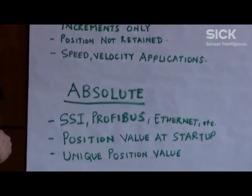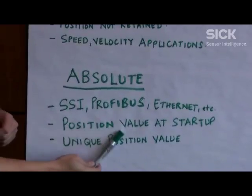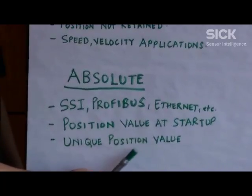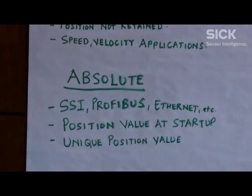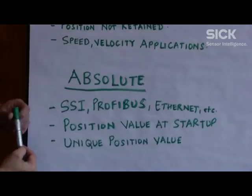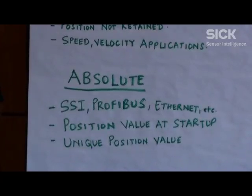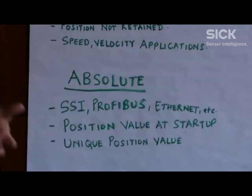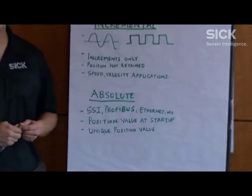In absolute encoders, the position value is a unique value that is given for each shaft position, and this is provided over interfaces such as SSI, Profibus, and Ethernet. That is the biggest difference between incremental and absolute encoders.